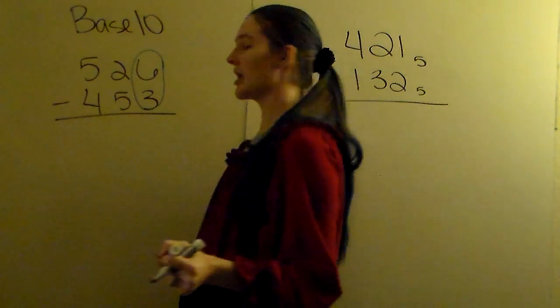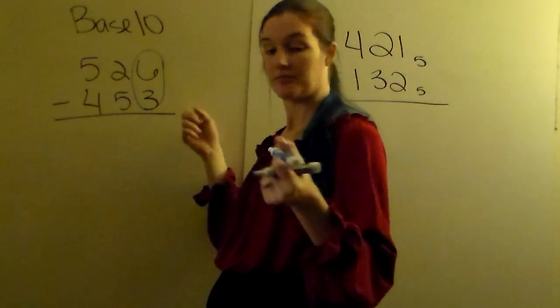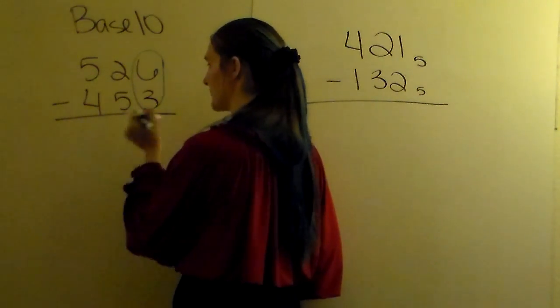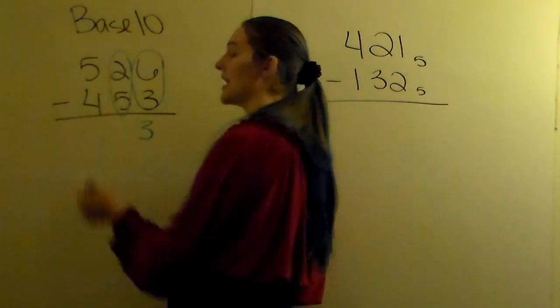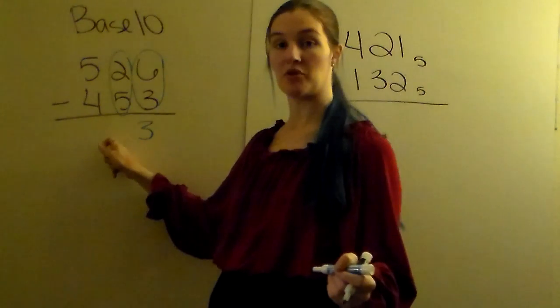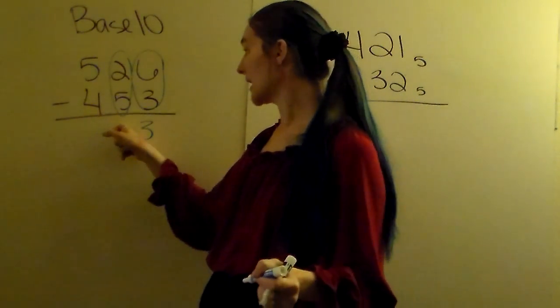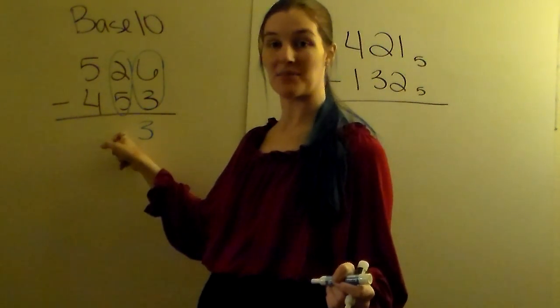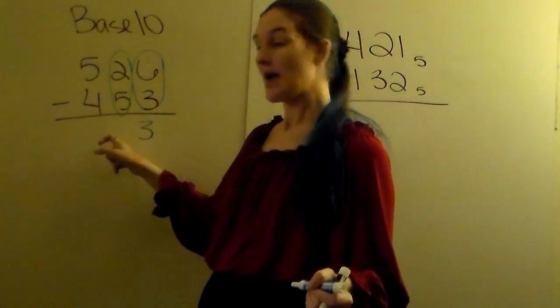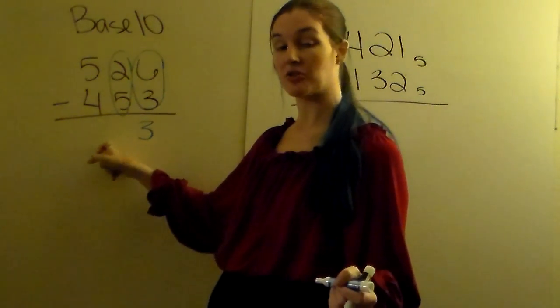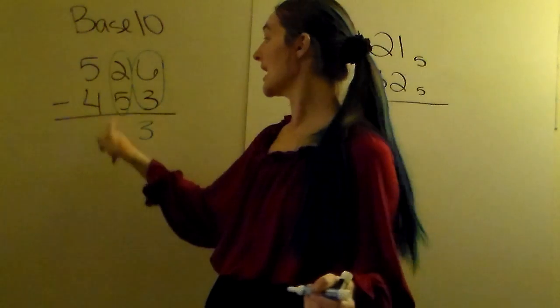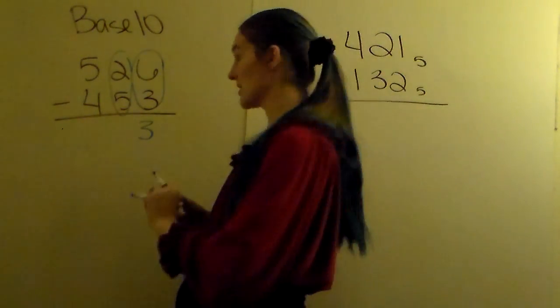we do subtraction starting at the right. 6 minus 3 gives me 3. But 2 minus 5—I can't put a negative number down here. If I put minus 3, that's going to look like something minus 33. I don't want it to look like subtraction. So I have to borrow from the next number over.